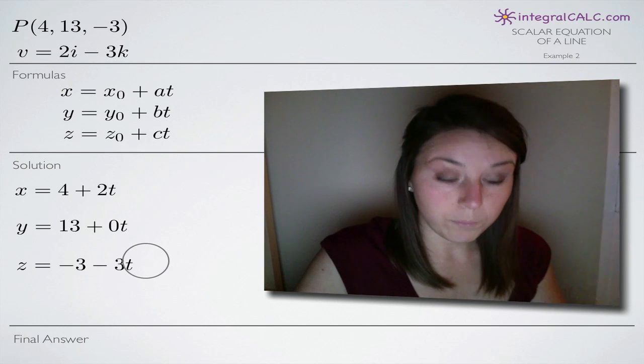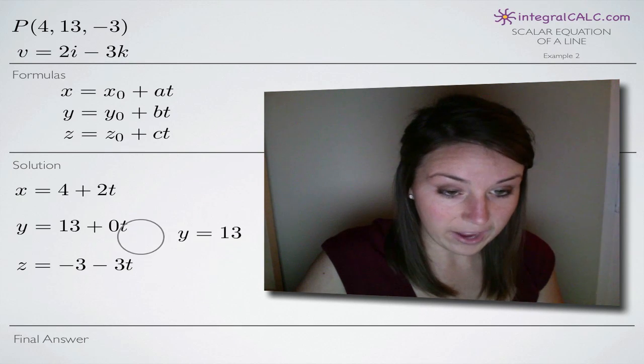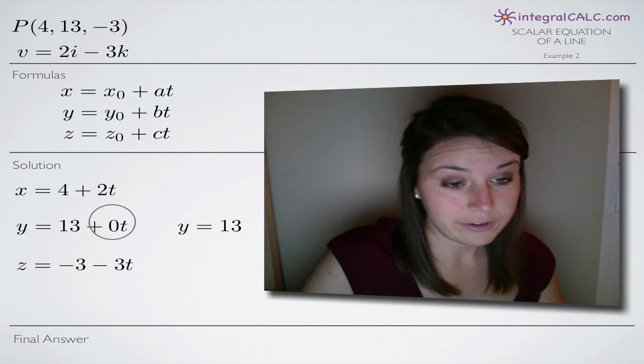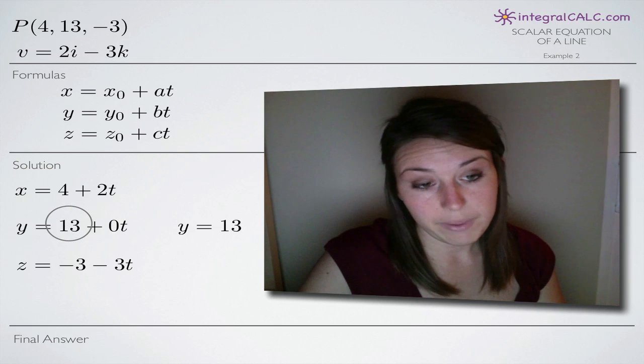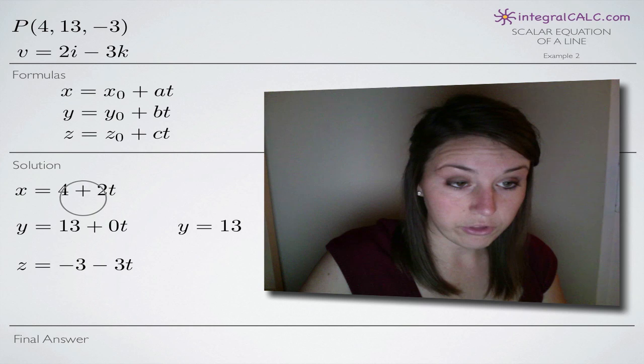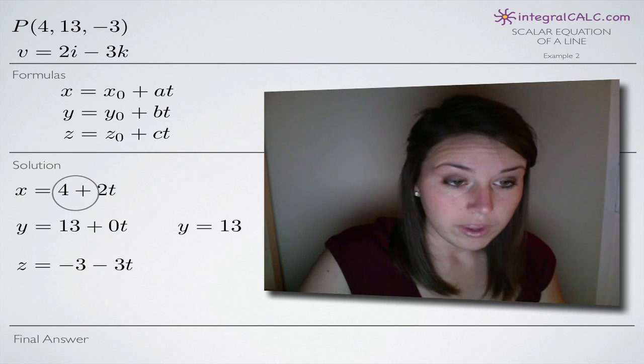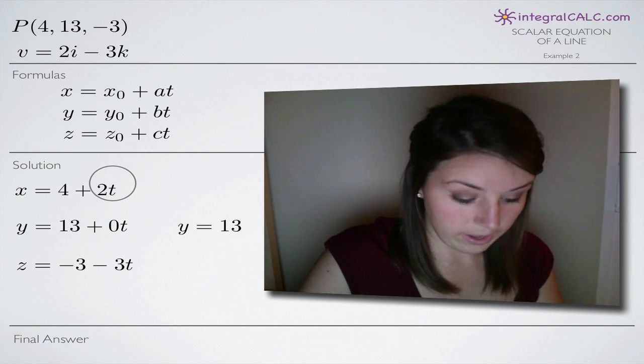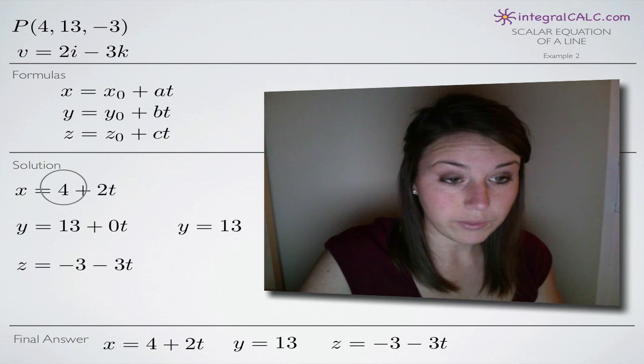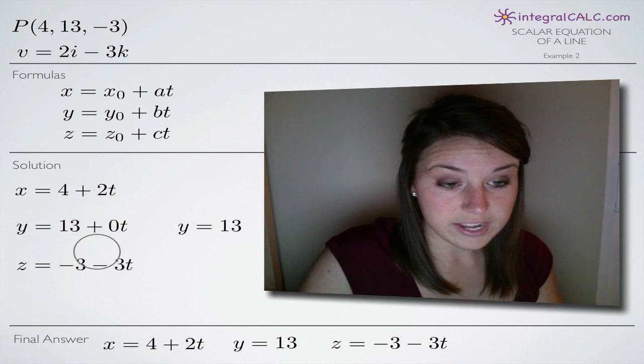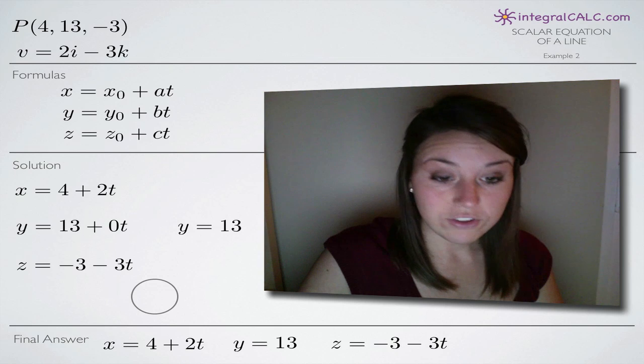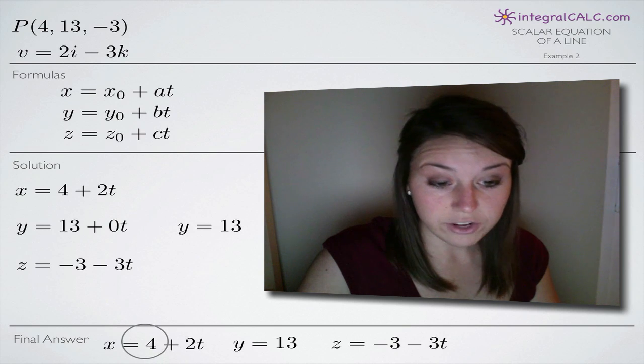We would be able to stop there except that we can simplify our y equation because we don't need to leave in zero t, so our y equation just ends up being y equals 13. We can't really simplify any further our x or z equations. You still want to leave them with t as the second term in the equation.